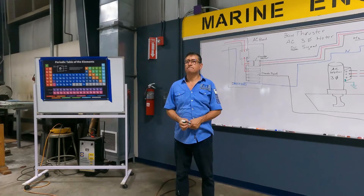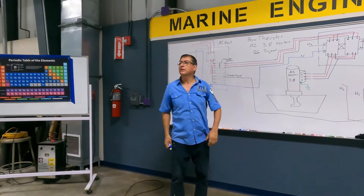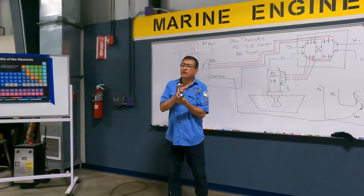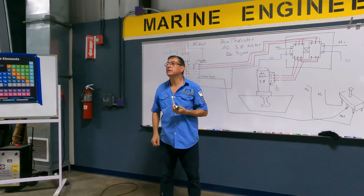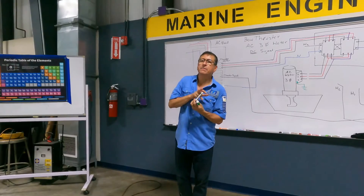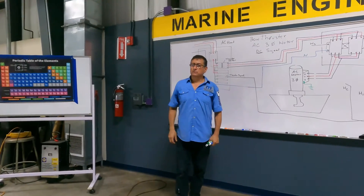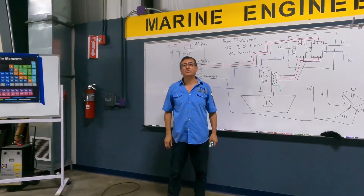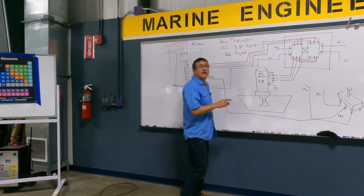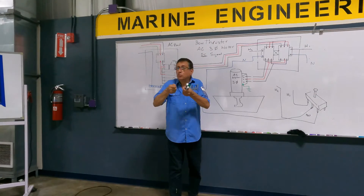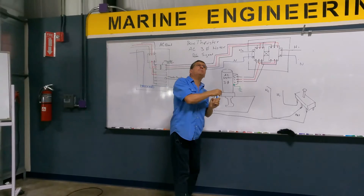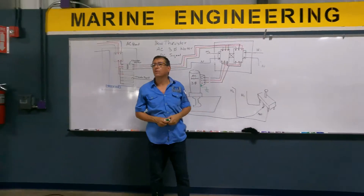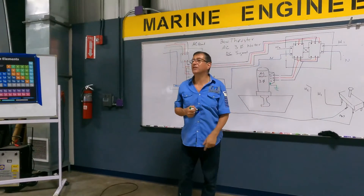Let us do a small troubleshoot on that motor. The captain complained that the bow thruster is moving to starboard side but not port side. You need to verify the contactors. Bring an external AC 120V signal and connect it here — the bow thruster moves in one direction. Bring the signal to the other contactor — nothing. The problem is that second contactor is finished.